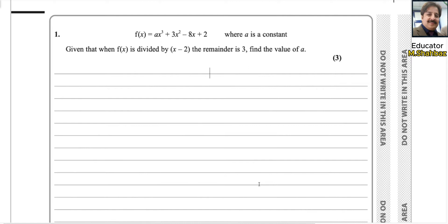Such kind of question could be solved by using remainder theorem. This is the divisor, x minus 2. We have a function f(x) equals ax³ plus 3x² minus 8x plus 2. Because this is the divisor, x minus 2,